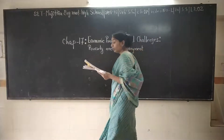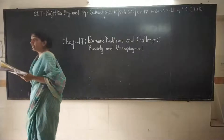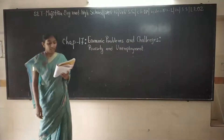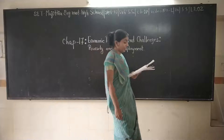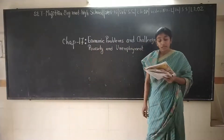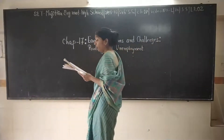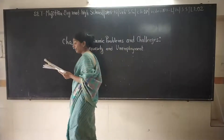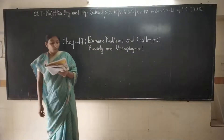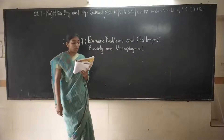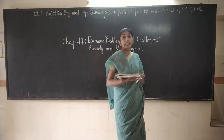Chhattisgarh with 36.93% is the poorest state of India, while Goa with 5.09% has the lowest poverty rate. In Gujarat, the proportion of poverty is 16.63%. States like Chhattisgarh, Assam, Uttar Pradesh, Manipur, Bihar, Arunachal Pradesh, Jharkhand, Odisha etc. have more than 30% proportion of poverty in India and are considered to be the poorest states.